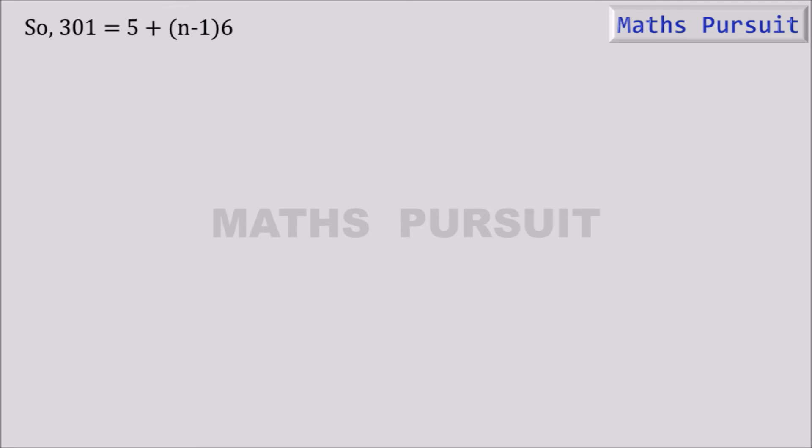Now solving this equation we get 5 plus 6n minus 6 is equal to 301. Reversing the equation so that it will be easy for finding the n here. Further solving the equation we got 5 plus 6n minus 6 is equal to 301, or 6n is equal to 301 minus 5 plus 6.